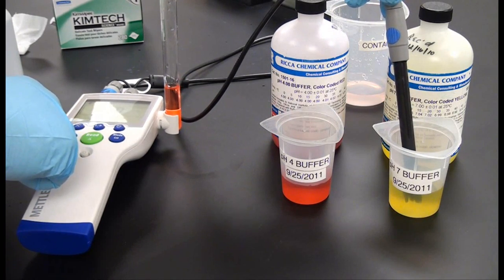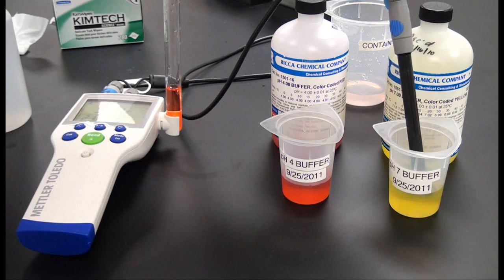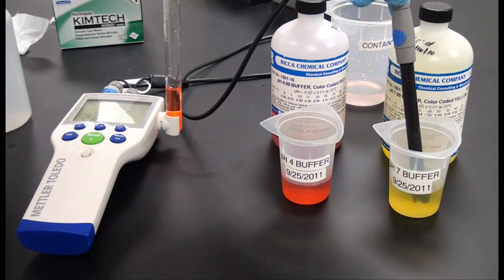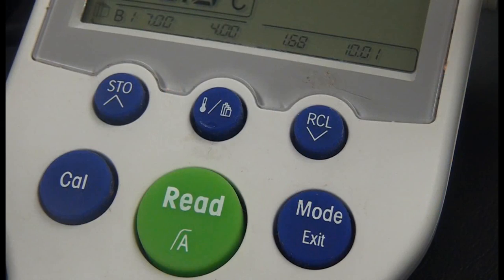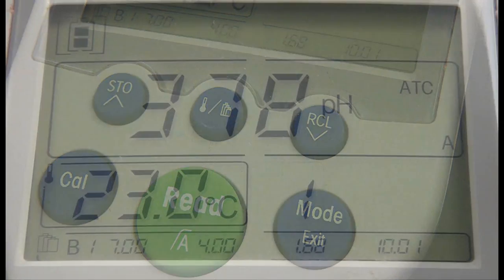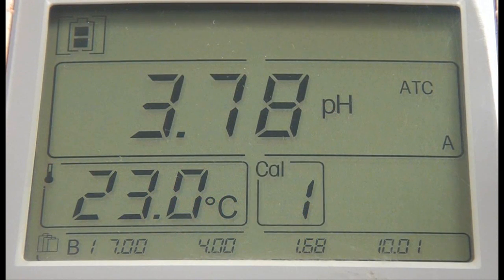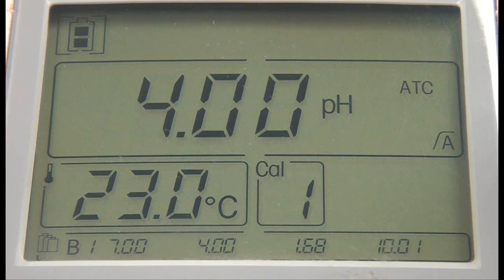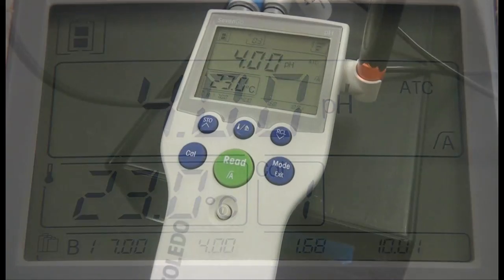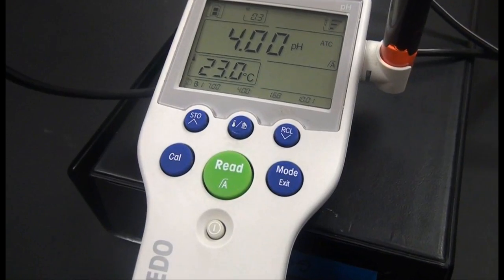The SG2 self-calibrates after the signal from the probe is stabilized or after pressing the read button. The meter displays and freezes the relevant buffer value and updates the calibration adjustment on the display. To accept the calibration and return to sample measurement, press the read button.